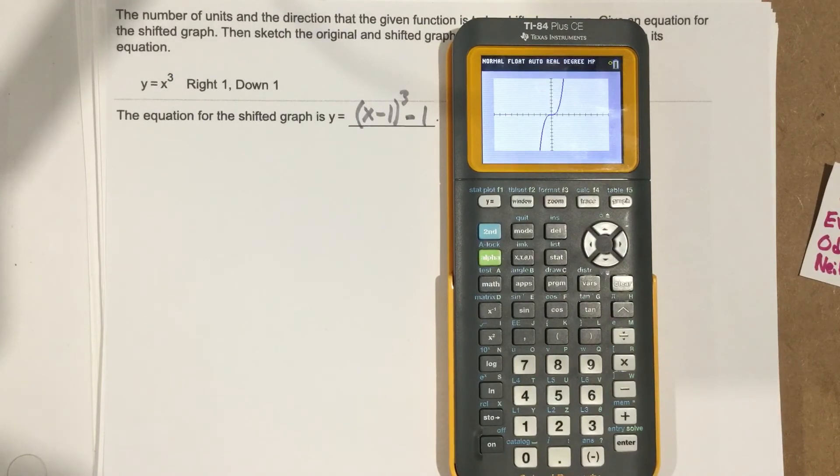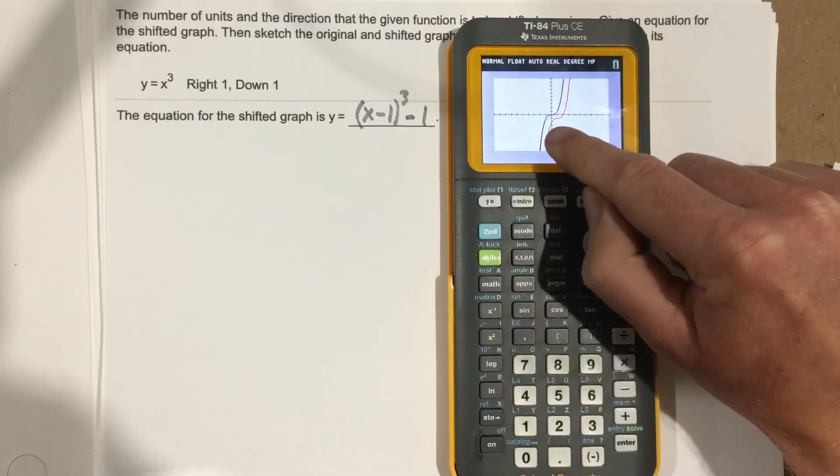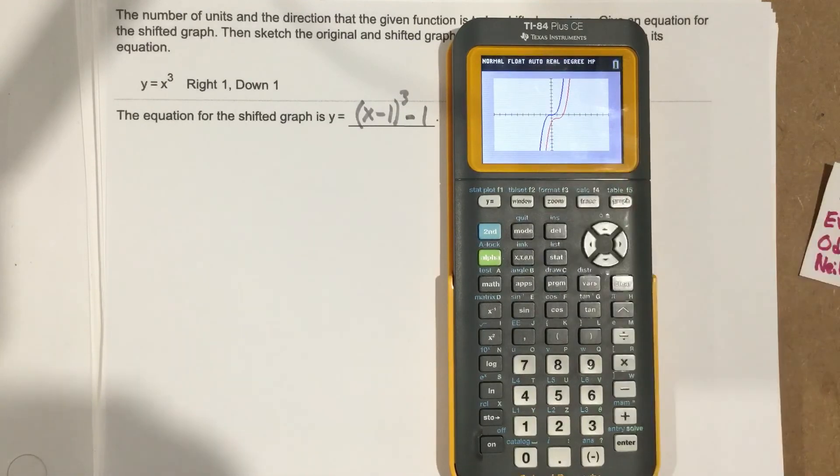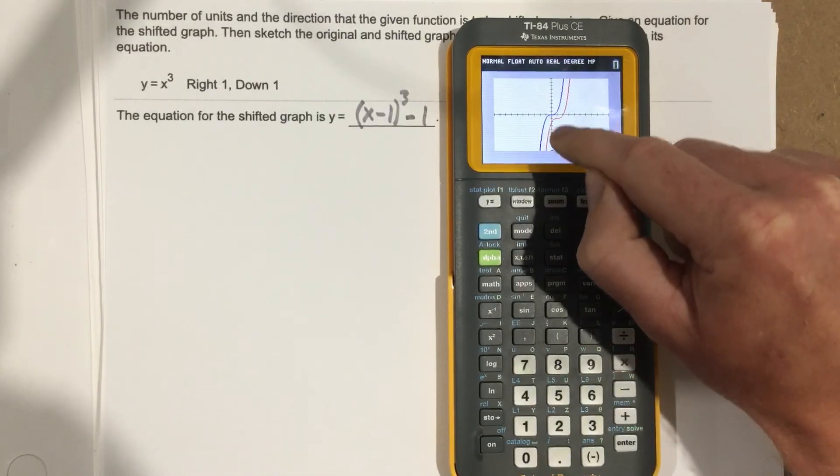The blue graph is the original, and the red graph is the shifted graph. Notice the red graph is shifted 1 to the right and down 1.